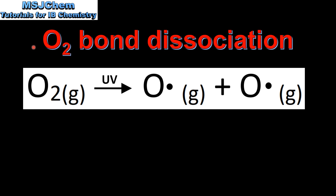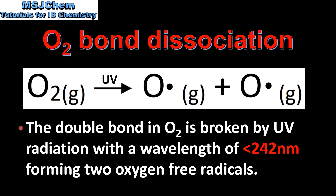Next we look at the bond dissociation in the oxygen molecule. This equation shows the dissociation of the oxygen molecule in the presence of UV light to form two oxygen free radicals. The double bond in oxygen is broken by UV radiation with a wavelength of less than 242 nanometers, forming two oxygen free radicals, which you can see here and here.